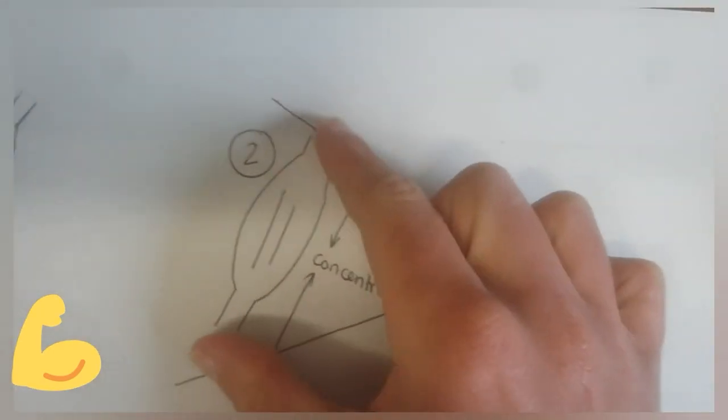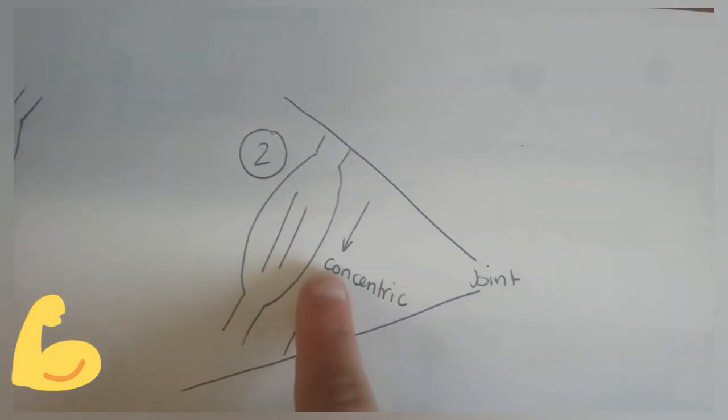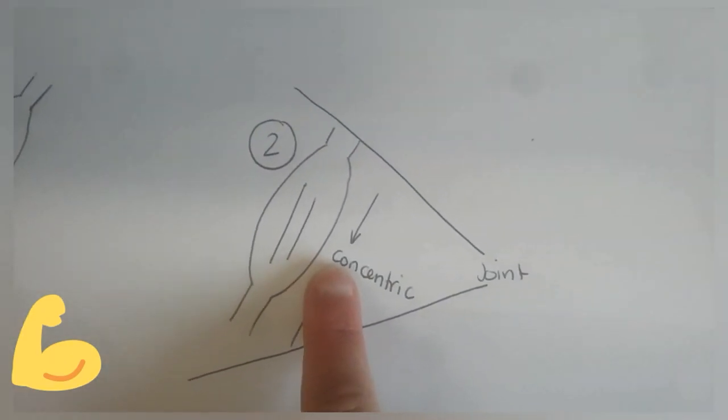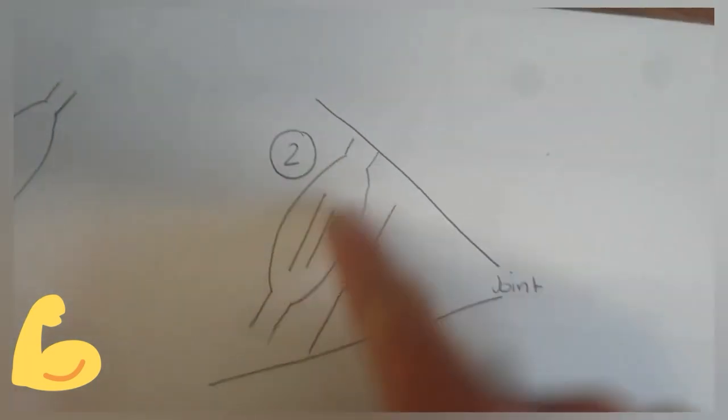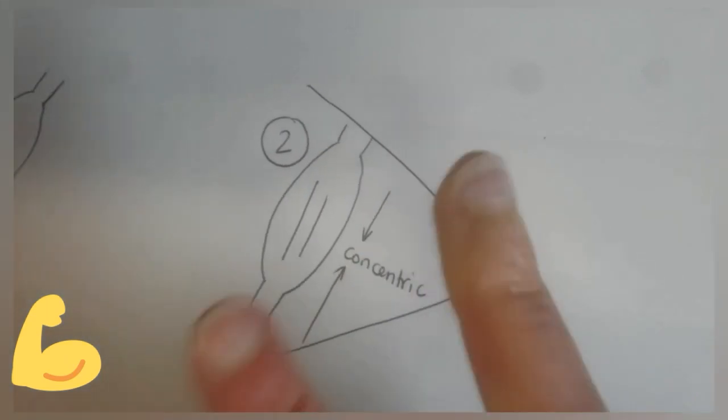As the muscle fibers are collapsing, it's a concentric contraction. And what joint action is happening as it concentrically contracts? That's step two.